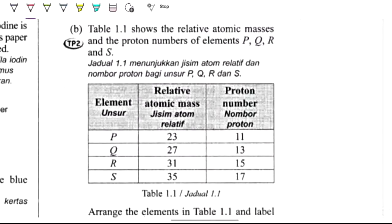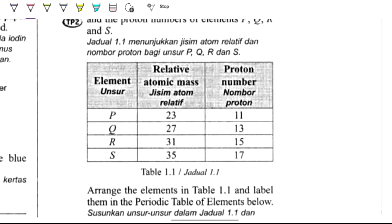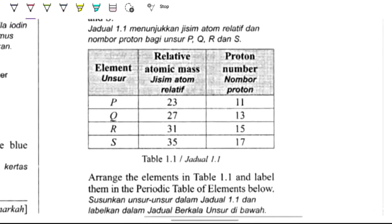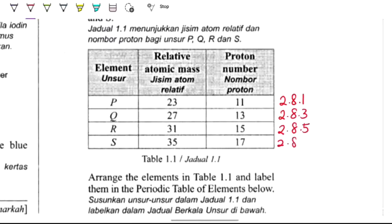Question B: The table shows the relative atomic mass and the proton number for four elements P, Q, R, and S. Arrange the elements in the table and label them in the periodic table below. We need to find the electron arrangement. P has proton number 11, meaning 11 electrons, so electron arrangement is 2, 8, 1. The others are 2, 8, 3 and 2, 8, 5 and 2, 8, 7.